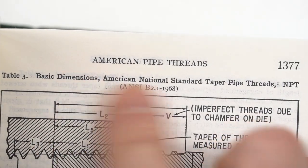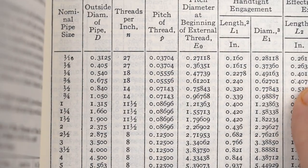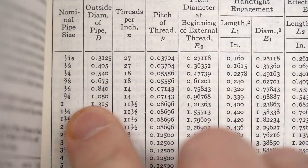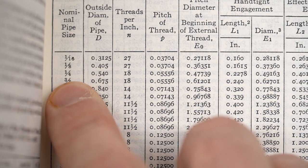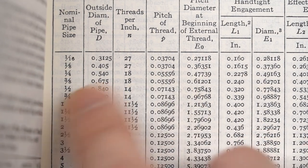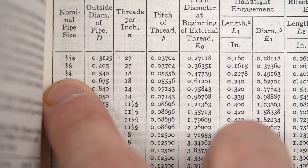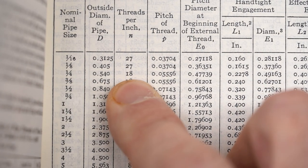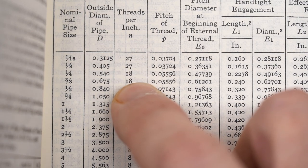These are the standard American pipe threads. There's a helpful table here giving dimensions and characteristics of those threads. There are tapered and straight threads. The two that I use most commonly are going to be quarter inch and eighth inch. For the eighth inch, it is 27 threads per inch. And the quarter inch national pipe thread is going to be 18 threads per inch.